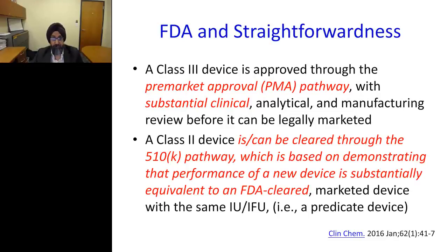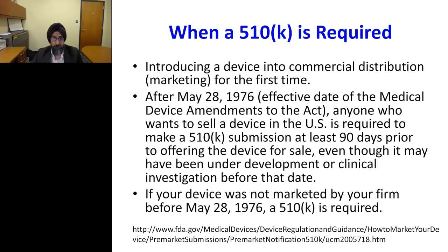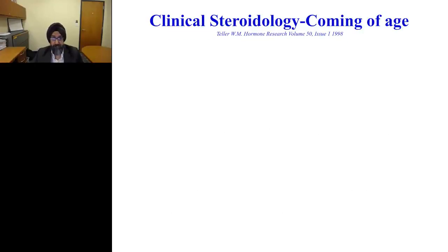FDA made it clear during the workshop that they would like to help vendors get their devices to market through the pre-market approval process for Class III devices, or through the 510(k) approval process for Class II devices. The 510(k) is required for any device brought to market after May 28, 1976. In order to make sure mass spec is delivering quality results, I would like to review how mass spec has come into the clinical labs.